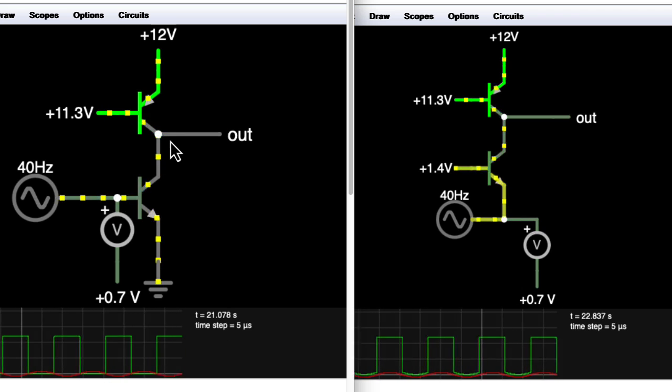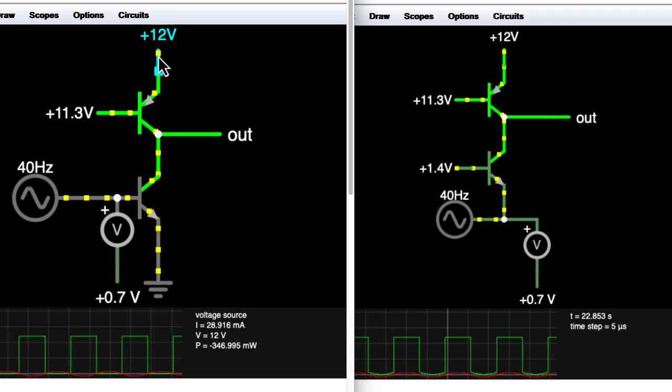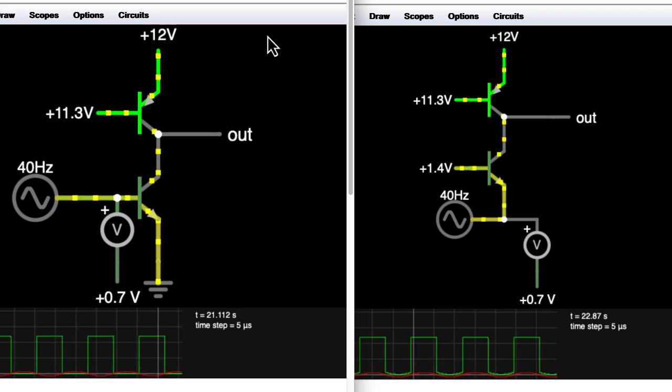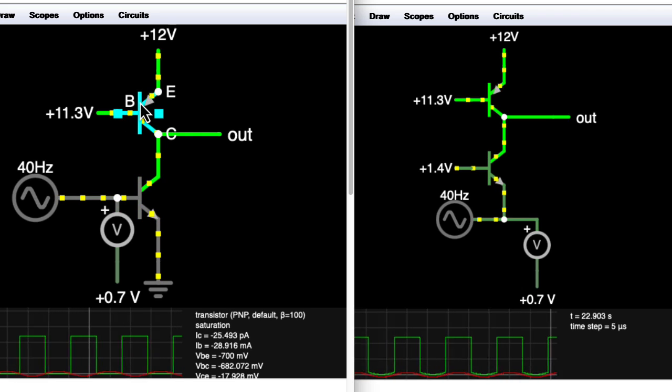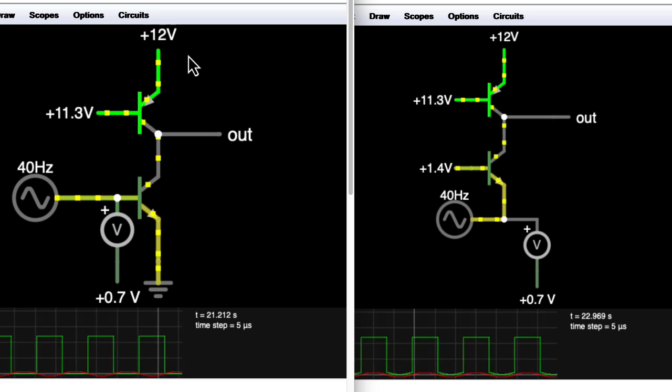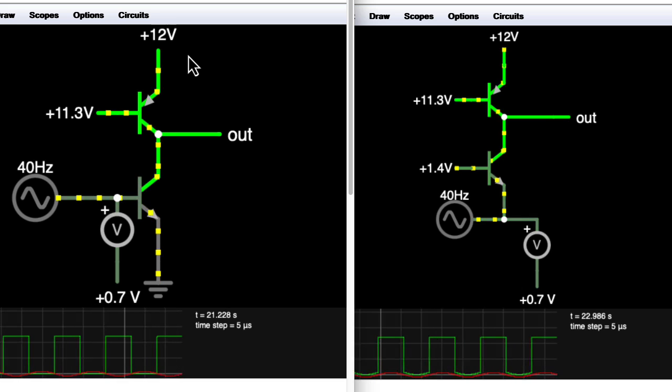In the particular case where you see no current flowing here, and you see all of the current flowing through here, that's a case where this transistor is no longer in the active region, and it's in what is for BJTs called saturation.